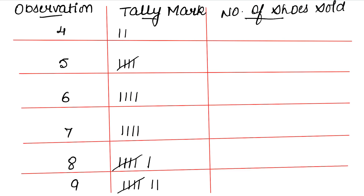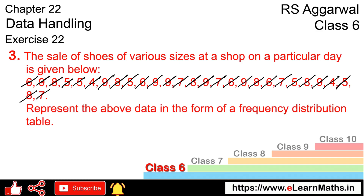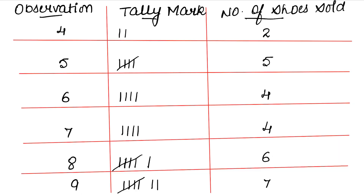Now we write the frequencies by counting all the sticks. Size 4: 2, size 5: 5, size 6: 4, size 7: 4, size 8: 6, size 9: 7. Counting the sticks for each observation gives us the frequency distribution table. This is our answer.